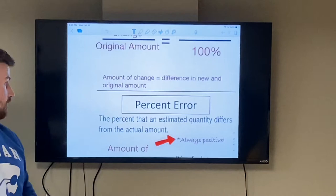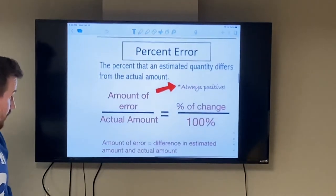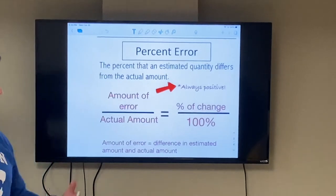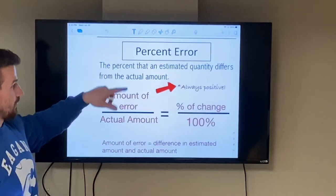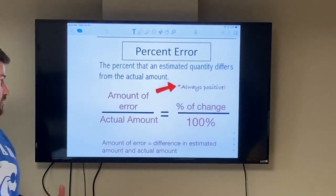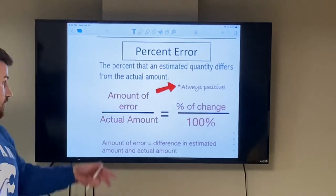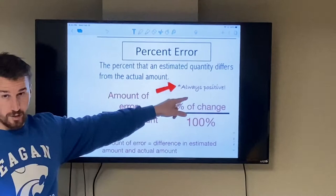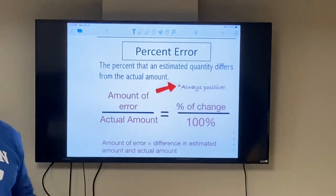We're also going to be talking about percent error. The percent error is basically the same thing as percent of change, only the percent error is the percent that an estimated quantity differs from its actual amount. So again, instead of amount of change, it's amount of error, which is again always positive over the actual amount, which is our whole amount.